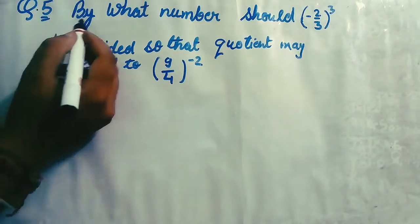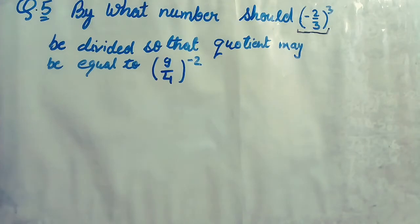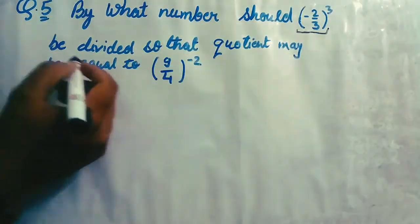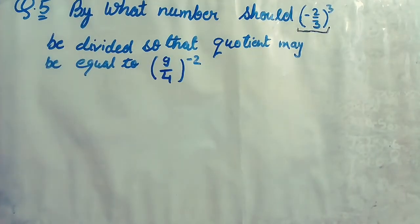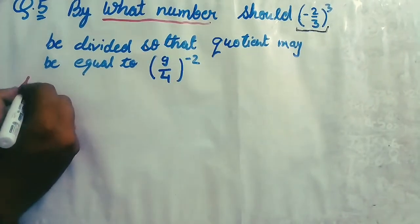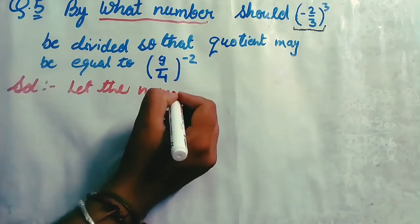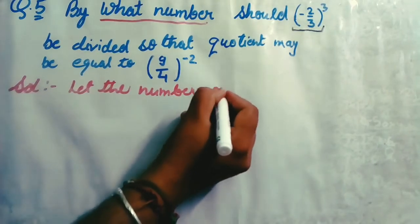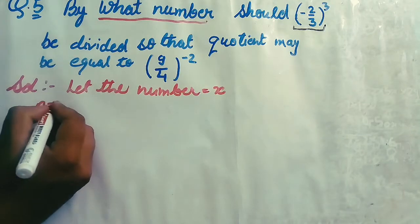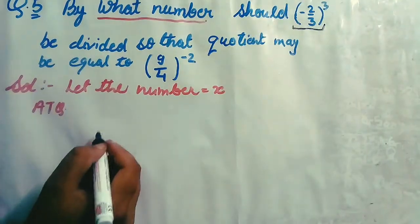The first question is: by what number should (-2/3) whole raised to power 3 be divided so that the quotient may be equal to (9/4) whole raised to power -2? Read the question properly — 'by what number' means there must be a number by which we have to divide (-2/3)³. Let the number equal x, an unknown number we are supposing.